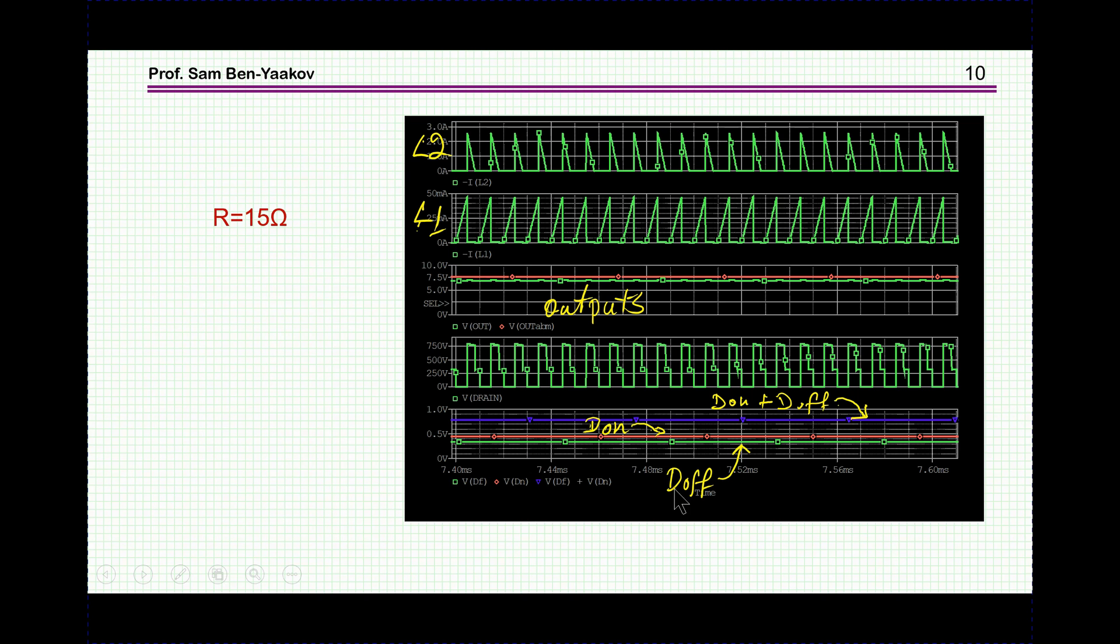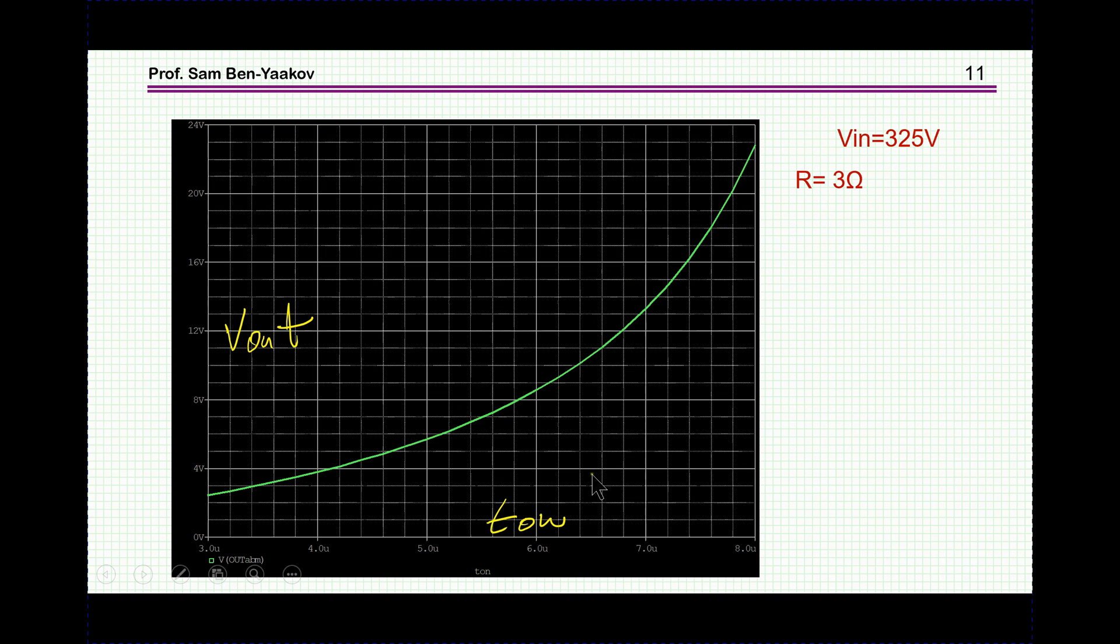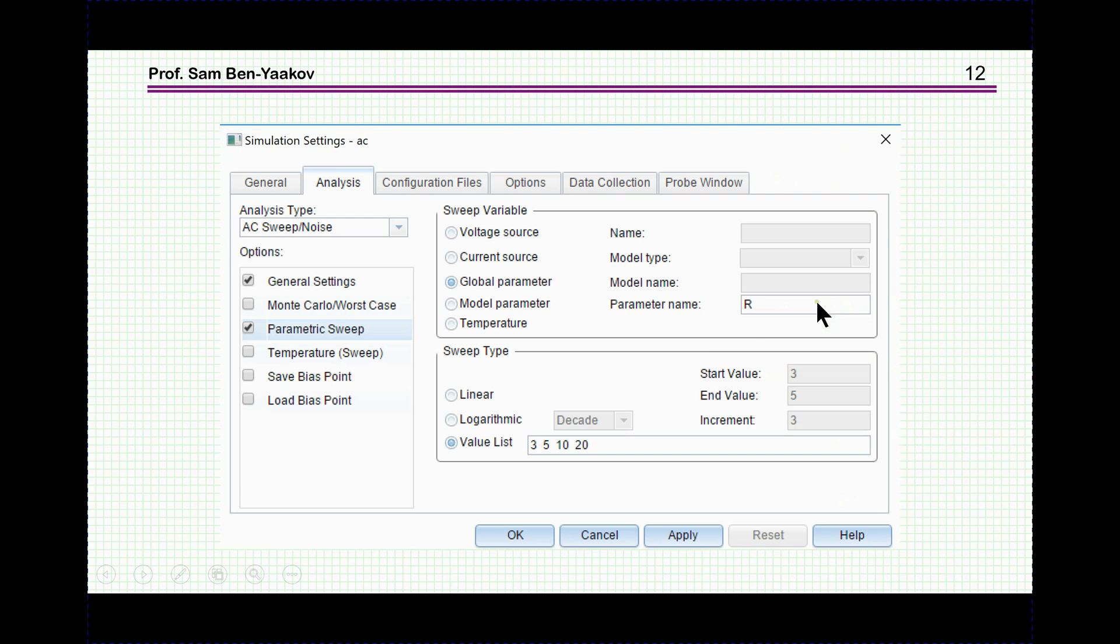And here, very interesting, we see now the DON and DOFF for the DCM. Now, the sum of these is not 1, because this is DCM. And DOFF is not a complementary of DON. So this is very neat. You can run very easily a DC sweep on, say, on TON, and get VOUT as a function of T. And this will be just a transfer function. And this is done for, say, this is an example, input 325 and a 3 ohm load resistor. This is CCM.